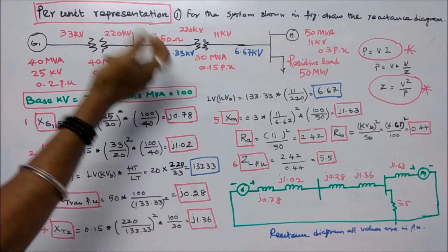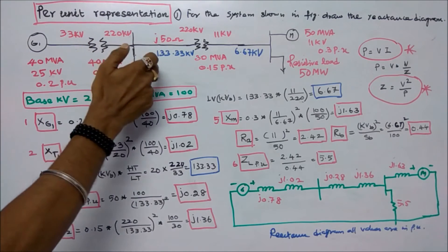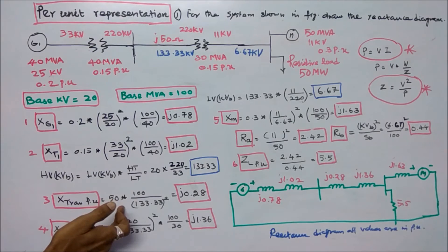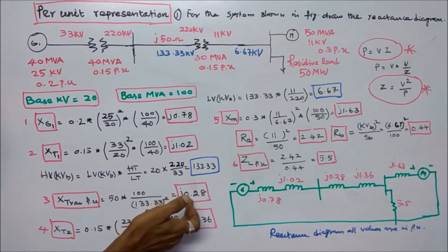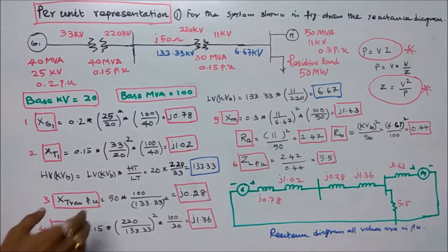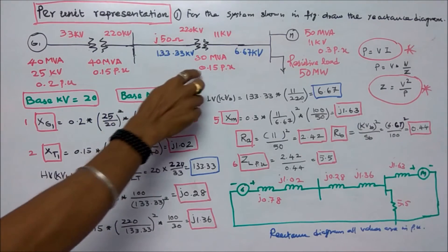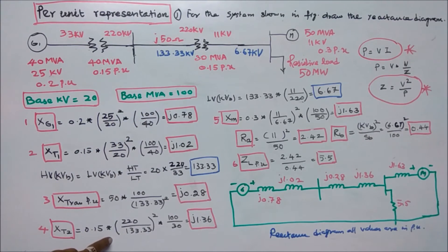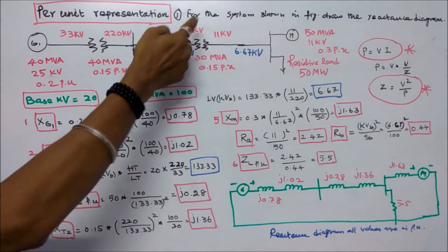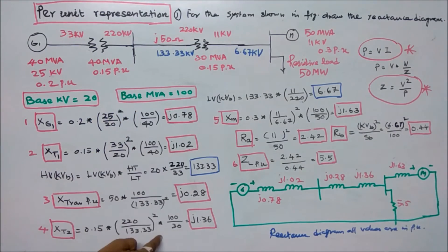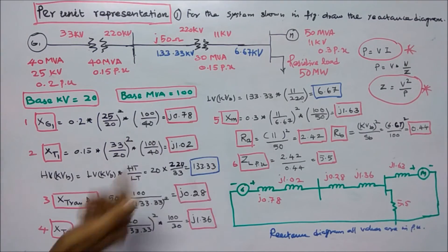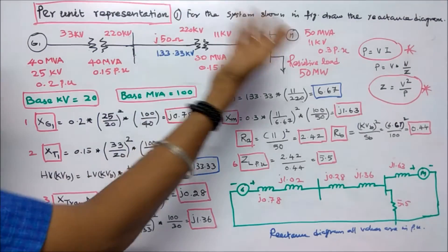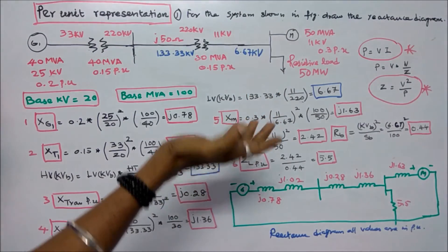Third is the transmission line. Actual impedance is 50, so per-unit = 50 × (Sb / kVb²) = 50 × (100 / 133.33²) = j0.28. Fourth is the transformer. Given value 0.15 multiplied by (220/133.33)² × (100/30) equals j1.36.